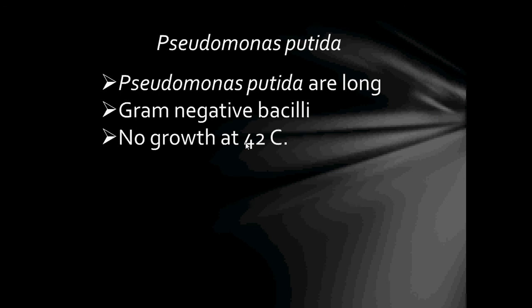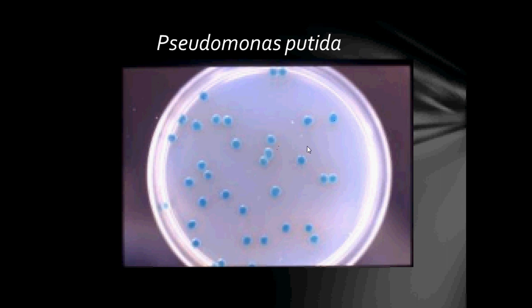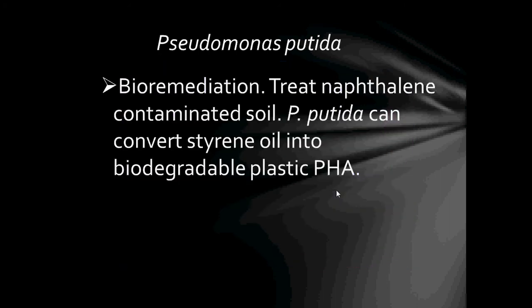The next bacteria is Pseudomonas putida. Pseudomonas putida are long gram-negative bacilli and, like Pseudomonas fluorescens, do not grow at 42 degrees Celsius. Here we have colonies of Pseudomonas putida growing on chrome agar, and their colonies appear blue-green in colour. Pseudomonas putida is used for bioremediation to treat naphthalene-contaminated soil, and can convert styrene oil into biodegradable plastic called PHA (polyhydroxyalkanoates), which are linear polyesters.